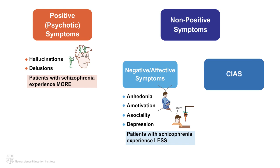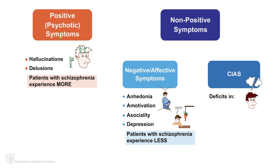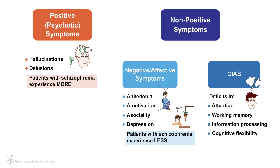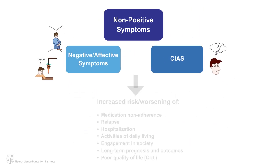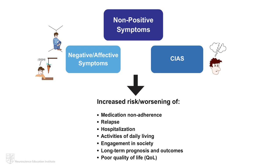The cognitive impairments in schizophrenia include deficits in attention, working memory, information processing, cognitive flexibility, and social cognition, to name just a few. Although the focus of treatment has historically been on positive symptoms, clearly evidenced by our reliance on dopamine D2-blocking antipsychotics, an overwhelming abundance of data show that it is the negative and cognitive symptoms that greatly impact the day-to-day functioning, long-term outcomes, and quality of life for patients with schizophrenia.